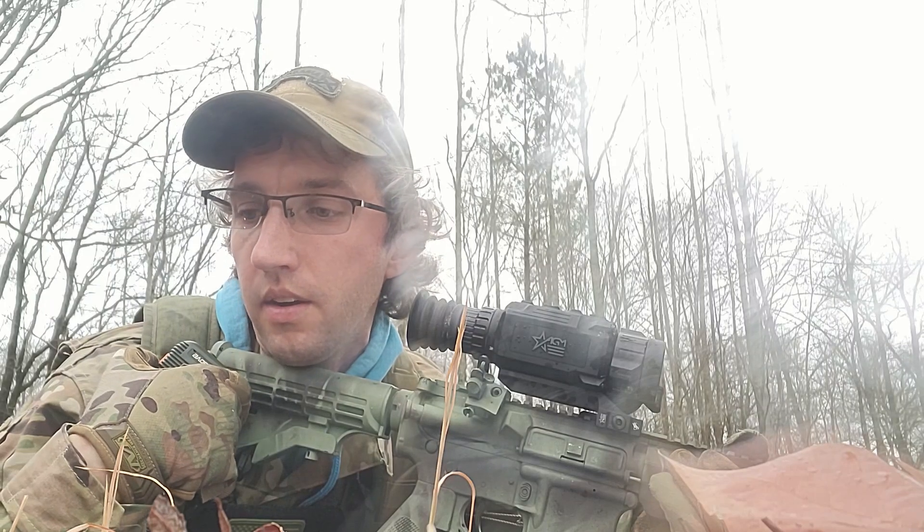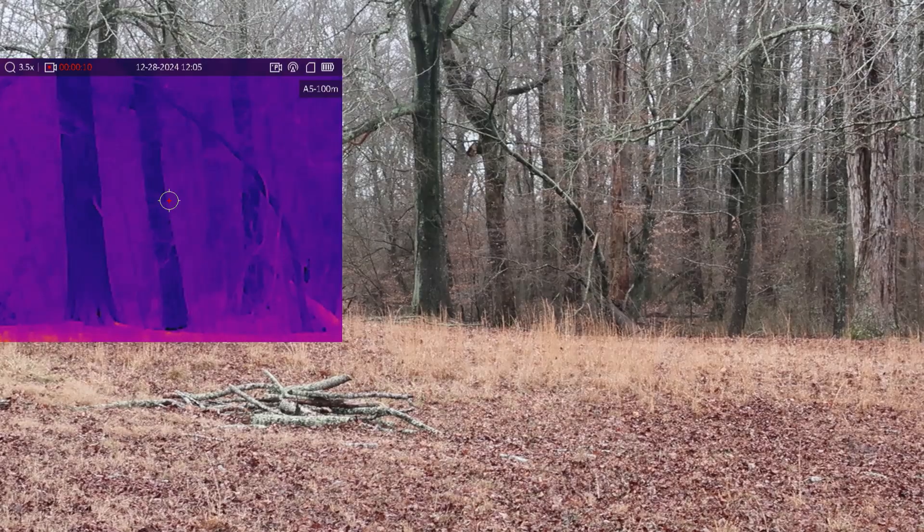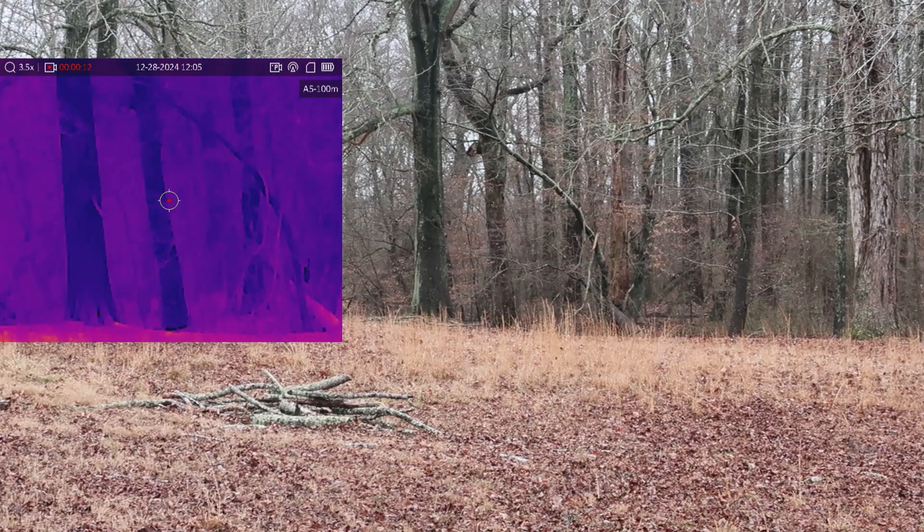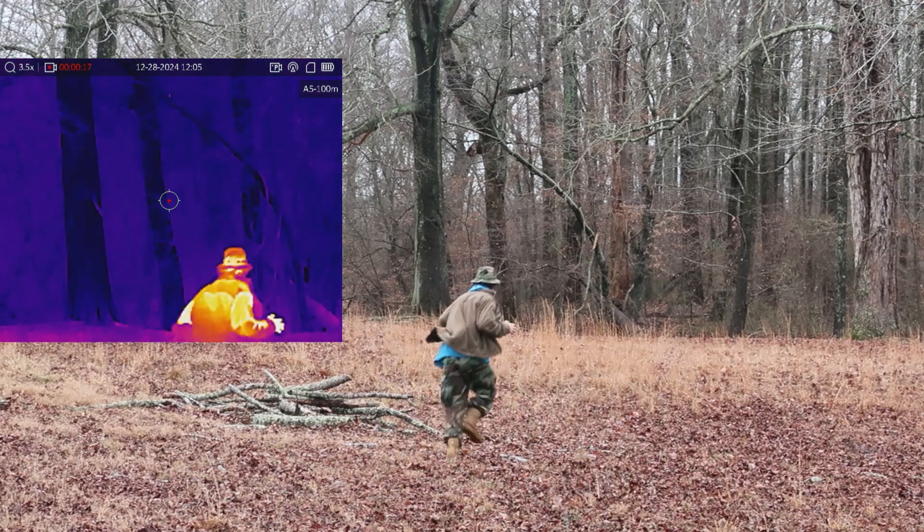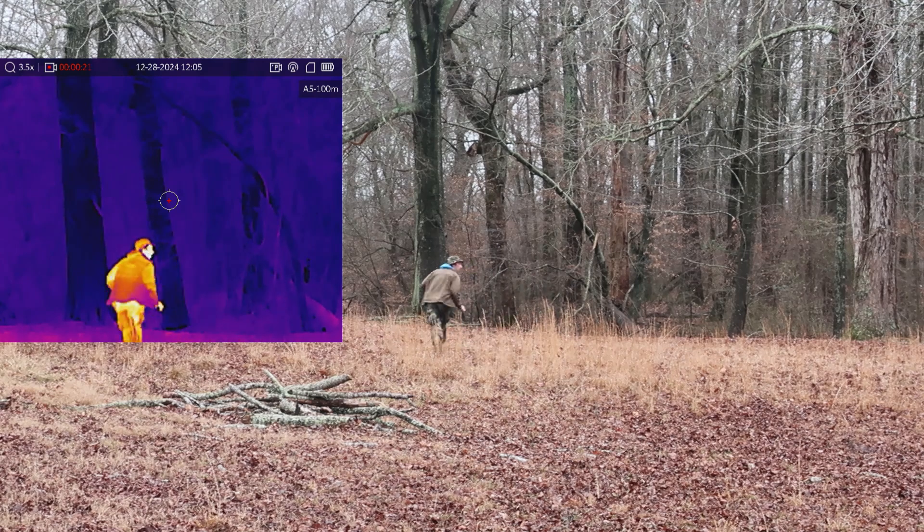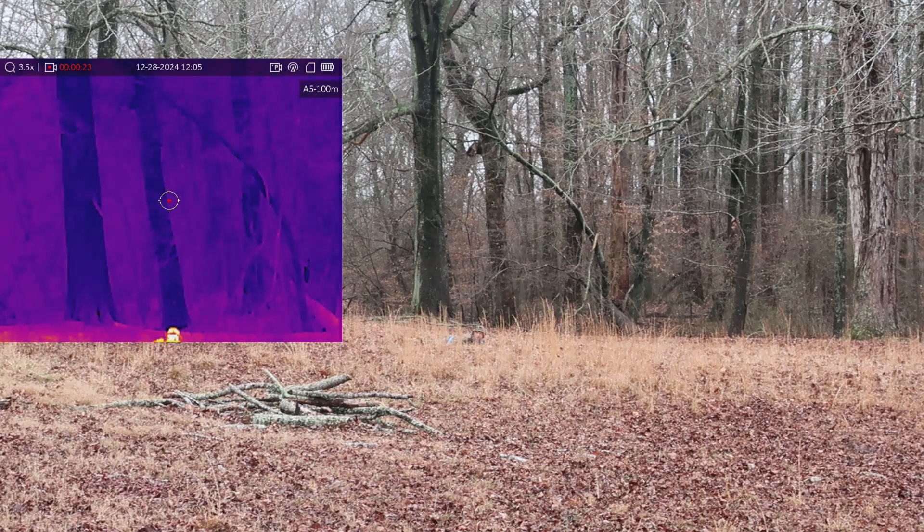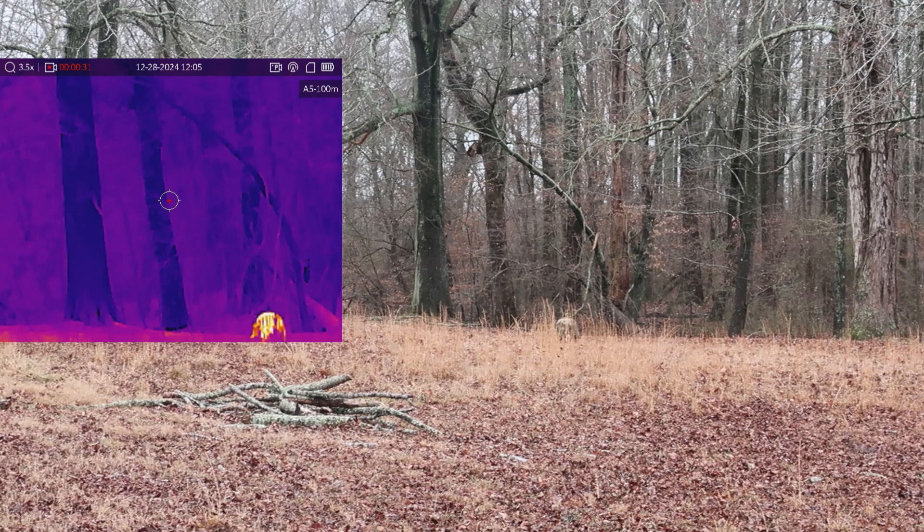Sierra, one male white. Alpha, running away looking derpy. Lima, west side of creek. Uniform, woodland BDU, neon blue hoodie. Echo, none.